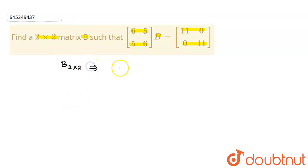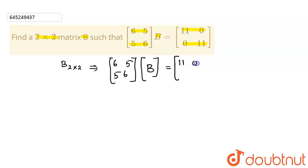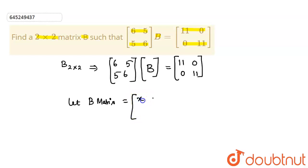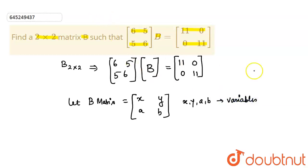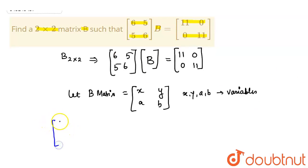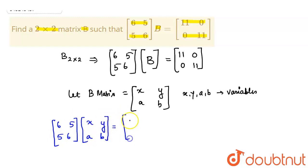So when 6 5 5 6 is multiplied with matrix B, the product is 11 0 0 11. Let matrix B be represented as x y a b, where x, y, a, and b are the variables. This gives us 6 5 5 6 into x y a b equals 11 0 0 11.